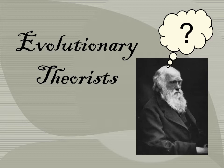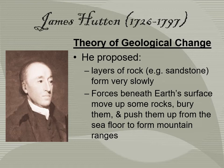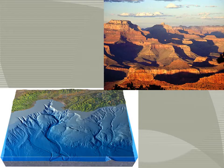Hello, and today we are going to be talking about evolutionary theorists and how we got to today's theory of evolution. James Hutton, born in 1726 and died in 1797, proposed the theory of geological change, which says that layers of rock — for example, sandstone — form very slowly, and that the forces beneath the earth's surface will move up some rocks, bury them, and push them up from the sea floor to form mountains. He had the idea of the fault line, and you can see some of his thoughts right here.